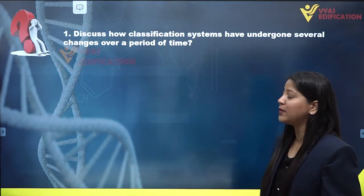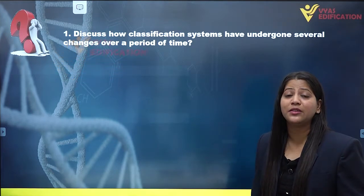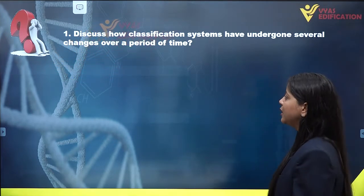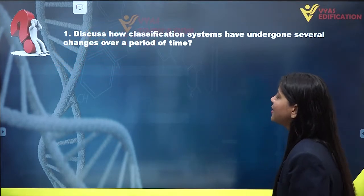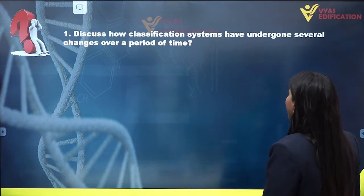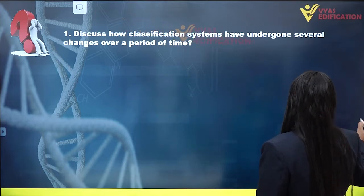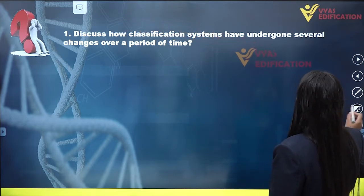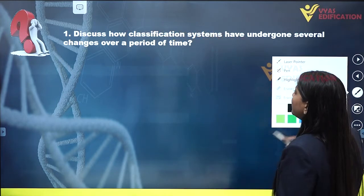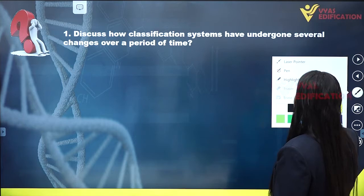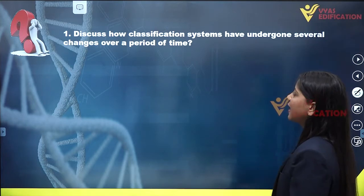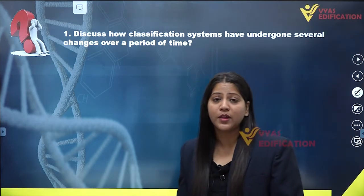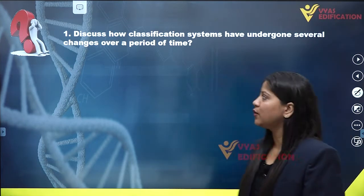So we have the first question of this chapter on the screen: discuss how classification systems have undergone several changes over a period of time.